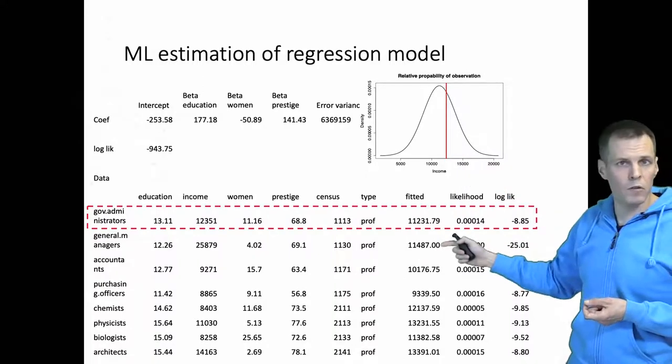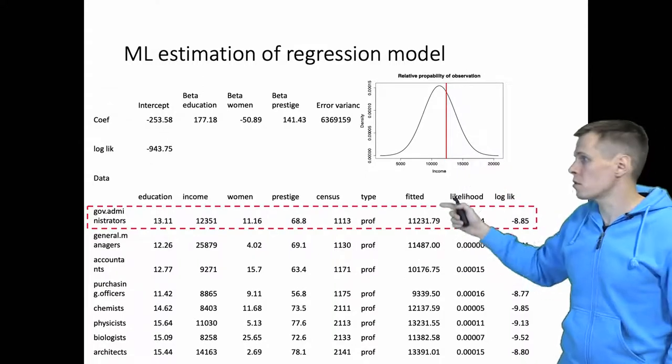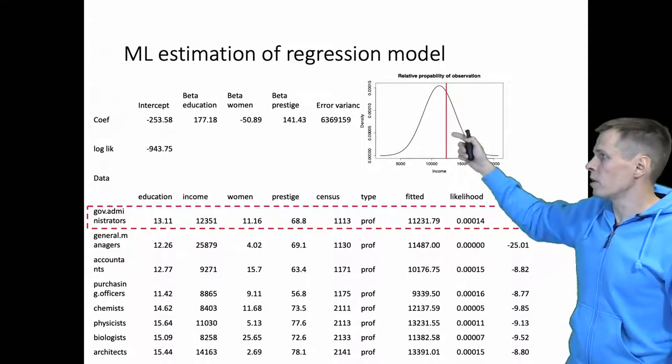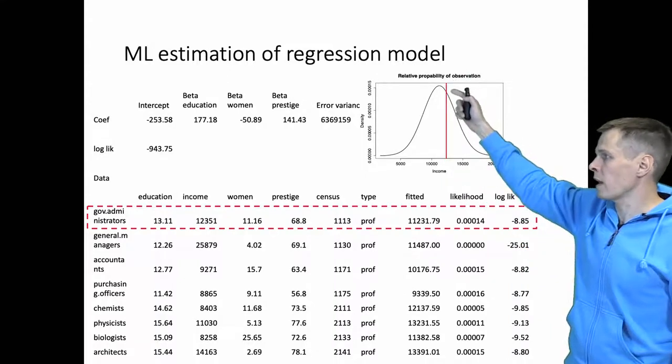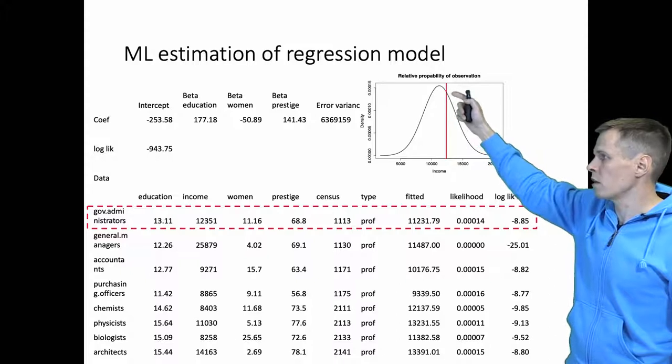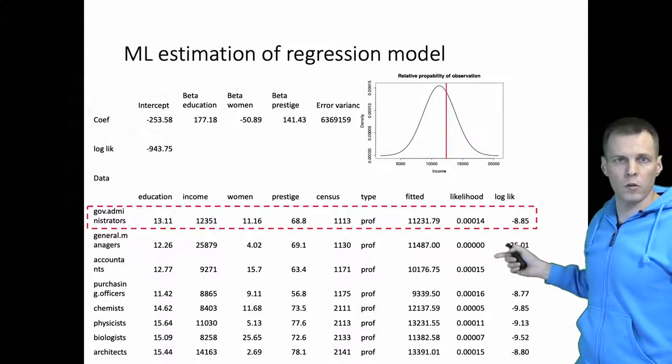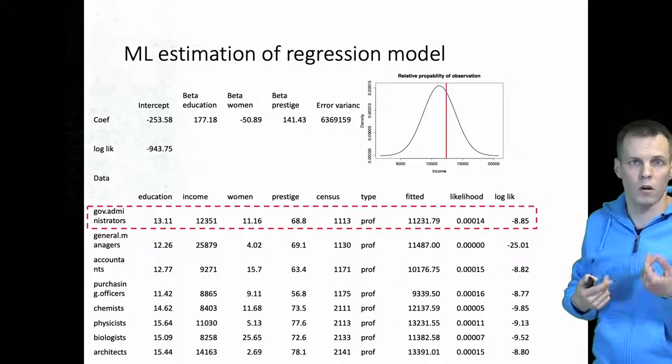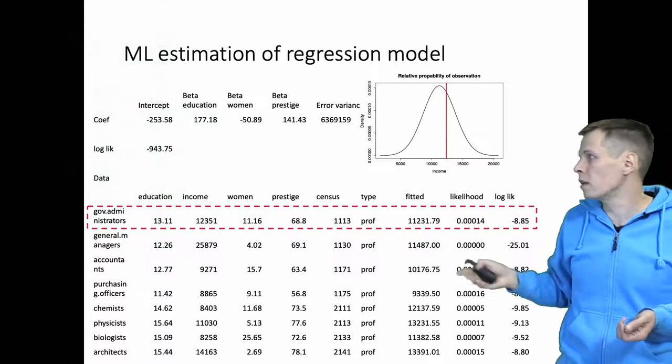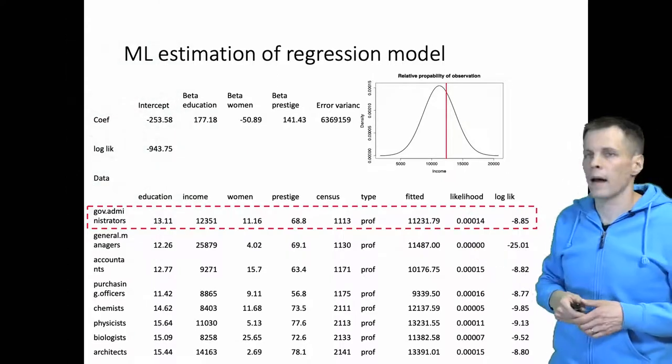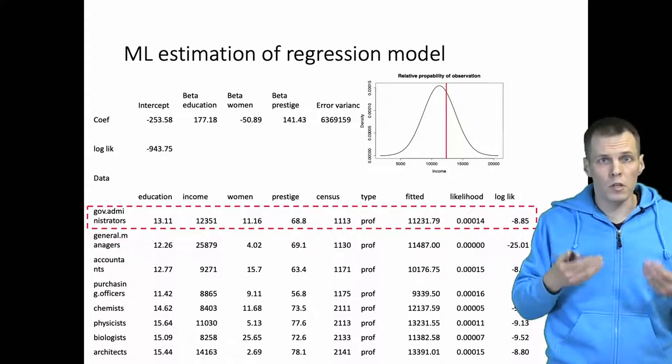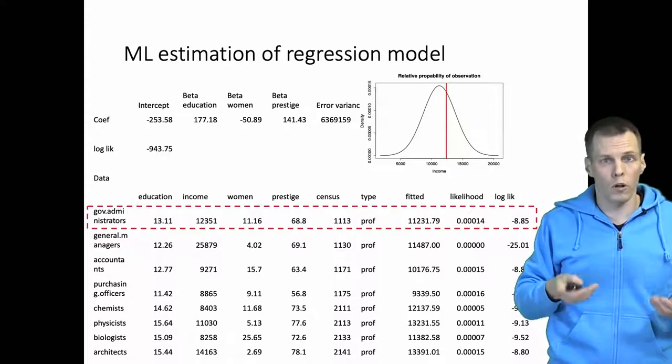They are expected to earn 11,000, so how likely is this observation? We go up to the curve, we read the value 0.0014 and that is our likelihood. Then we take the log because logs are easier for computers to work with, and we proceed using this approach and go through all the observations.